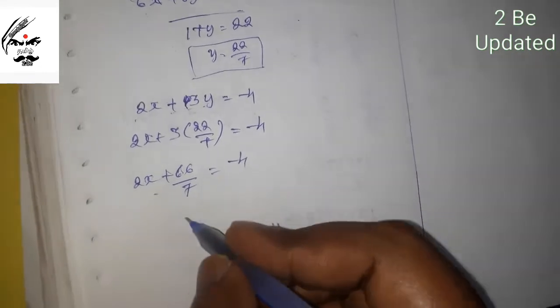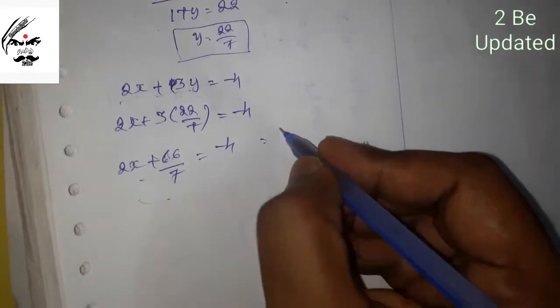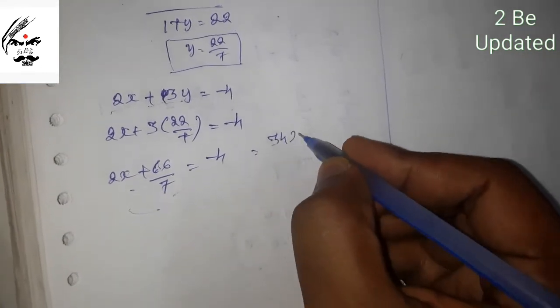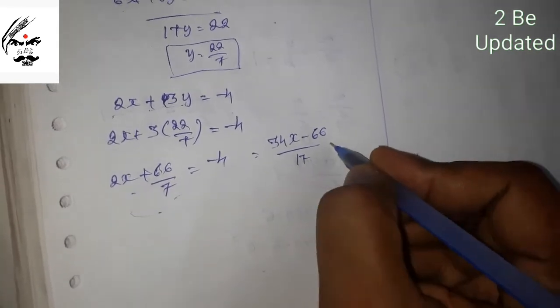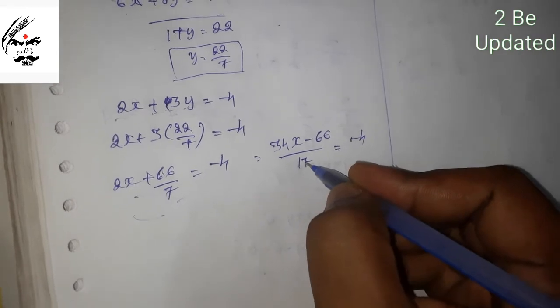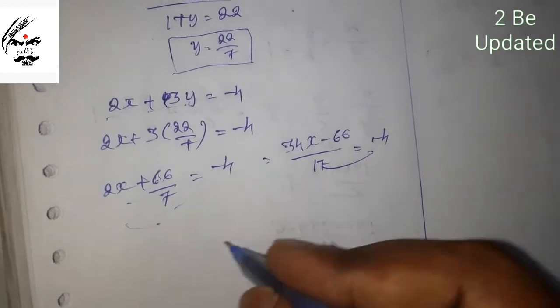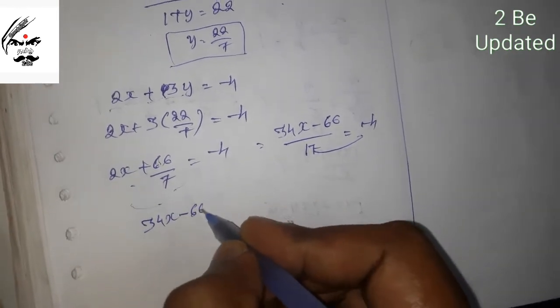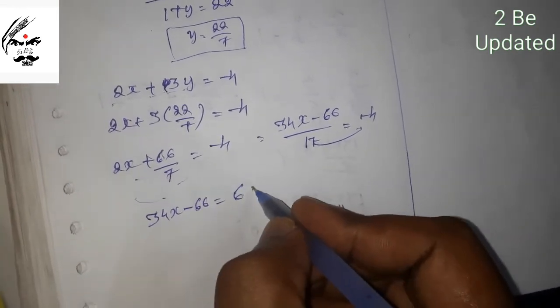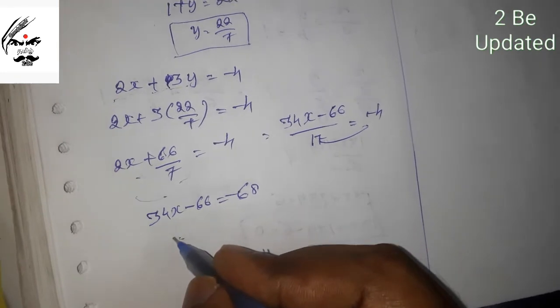2x minus 66 by 7 is equal to minus 4. Multiplying through by 7, we get 14x minus 66 equal to minus 28.